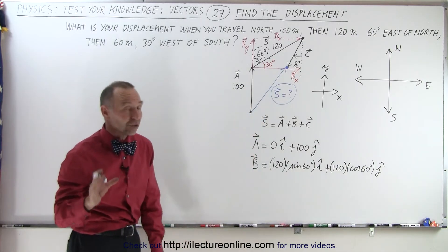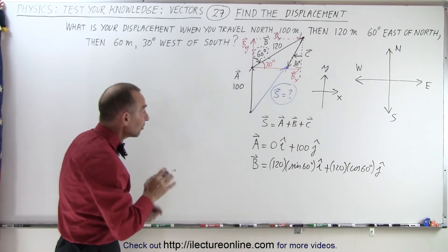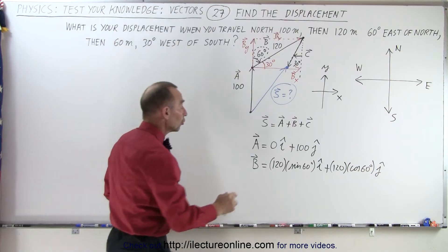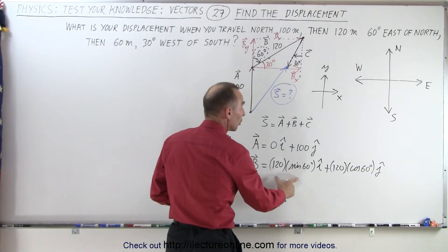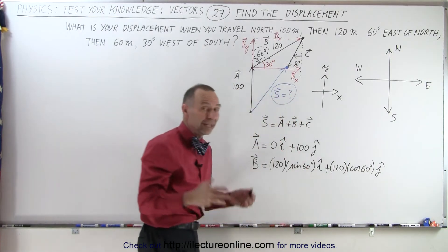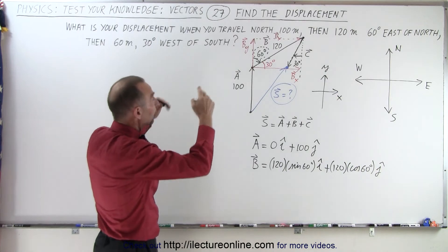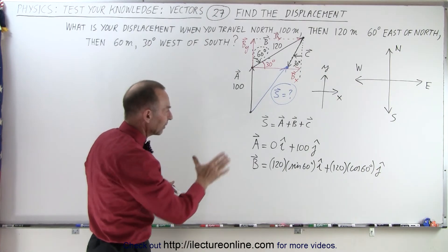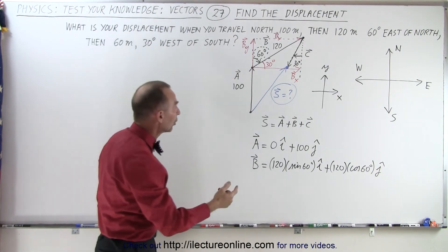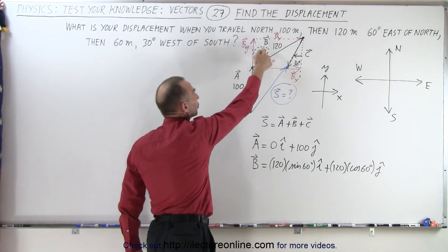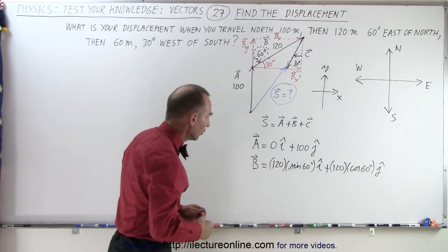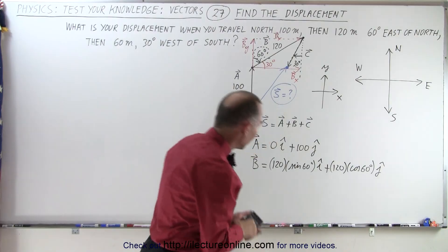This shows you, depending upon which angle you use, that you don't necessarily automatically associate the cosine to the X component and the sine to the Y component. It really depends upon how things are drawn and which angle you use. So I did this kind of intentionally. We could use the 30 degree angle, but I'm going to use the 60 degree angle. So in this case, let's calculate this out.